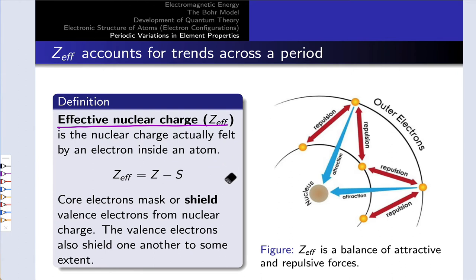So a simple formula for Z-effective is the nuclear charge, the full nuclear charge, minus S, which reflects the repulsion of the core electrons and valence electrons, an idea called shielding. In some sense, the core electrons shield the valence electrons from the attraction of the positively charged nucleus.